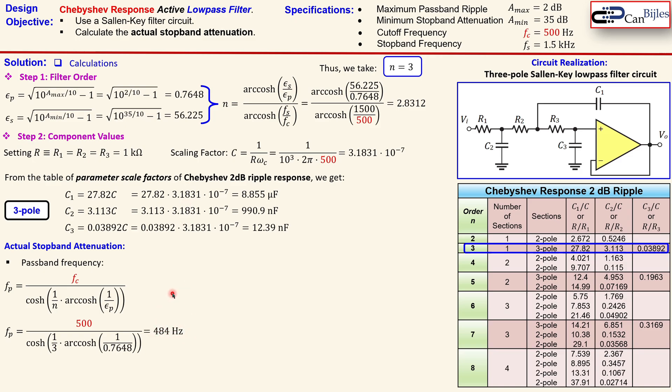And this is also the frequency where the gain is minus A max or minus 2 dB. This is the meaning, actually, of this ripple. We will dive in that ripple in more detail when we discuss the simulation results in SPICE.